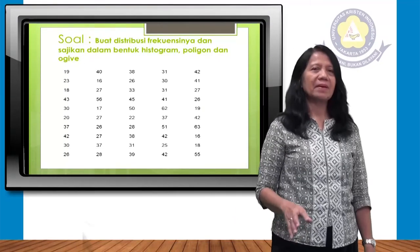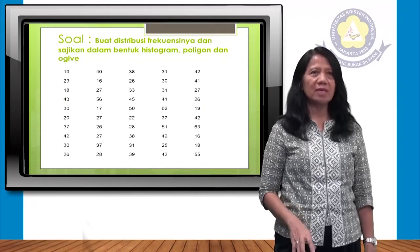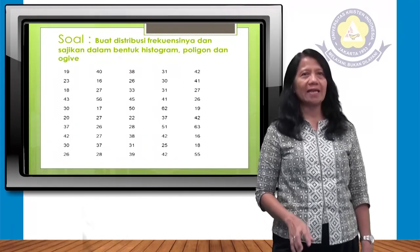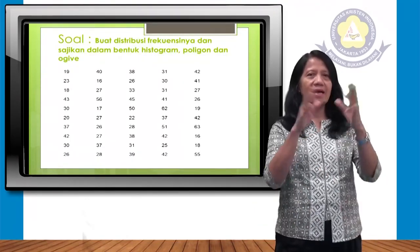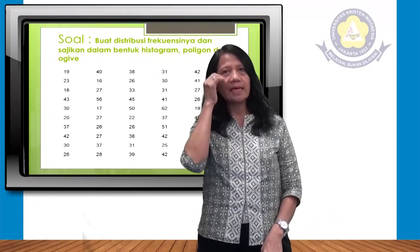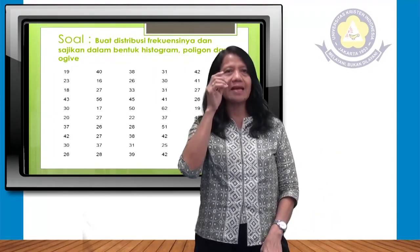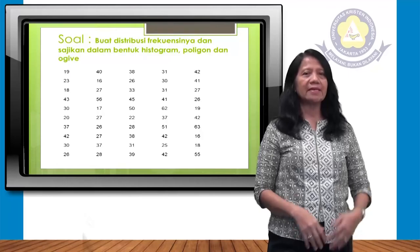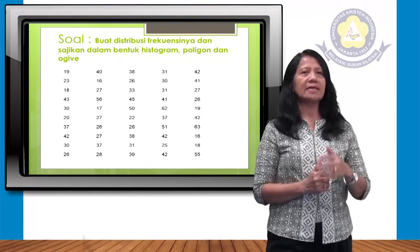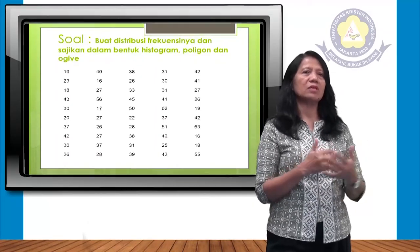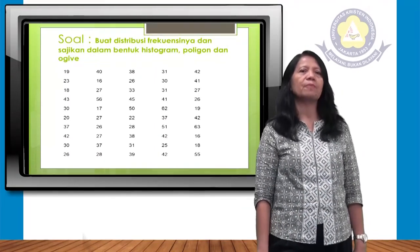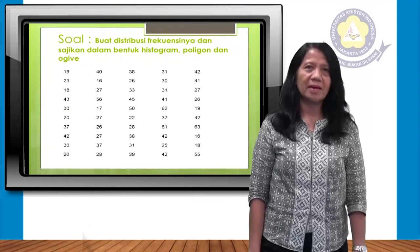Sampai di sini, ada yang mau bertanya mungkin? Kalau tidak, saya berikan contoh soal. Sama seperti tadi, hanya datanya berbeda — bukan perusahaan harga saham. Caranya sama: urutkan dari kecil ke besar (ascending), kemudian ikuti langkah-langkah tadi untuk menentukan kelasnya. Terima kasih.